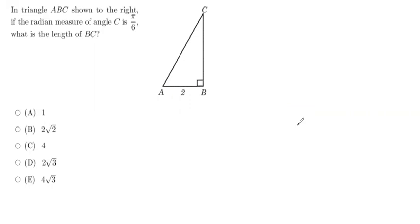So as a reminder, we have two types of special right triangles. We have the 45-45-90, and we have the 30-60-90.